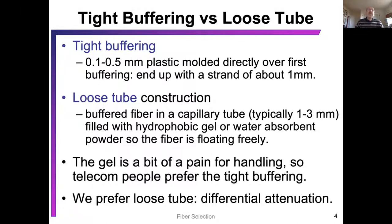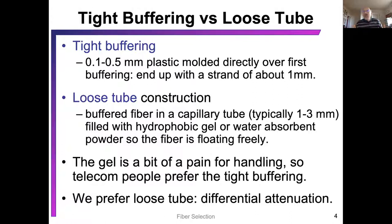Tight buffering can be used, and particularly for aerial deployments we have used tight buffered cables. If you use bend-tolerant fiber and other tricks, you can get it to work, but it is a challenge. Loose tube constructions are the preferred construction, where the fiber sits inside a capillary tube, usually one to three millimeters — sometimes as little as 0.8 millimeters — and it's often filled with a hydrophilic gel that is water-absorbing and will scavenge hydrogen.